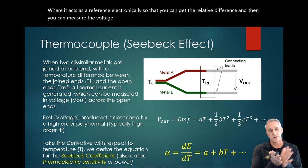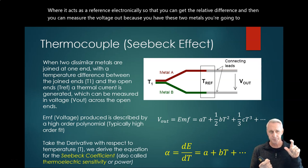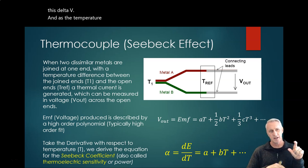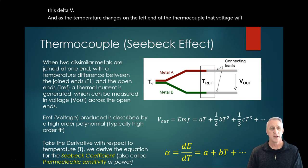Because you have these two metals, you're going to get this delta V. And as the temperature changes on the left end of the thermocouple, that voltage will change with that temperature.